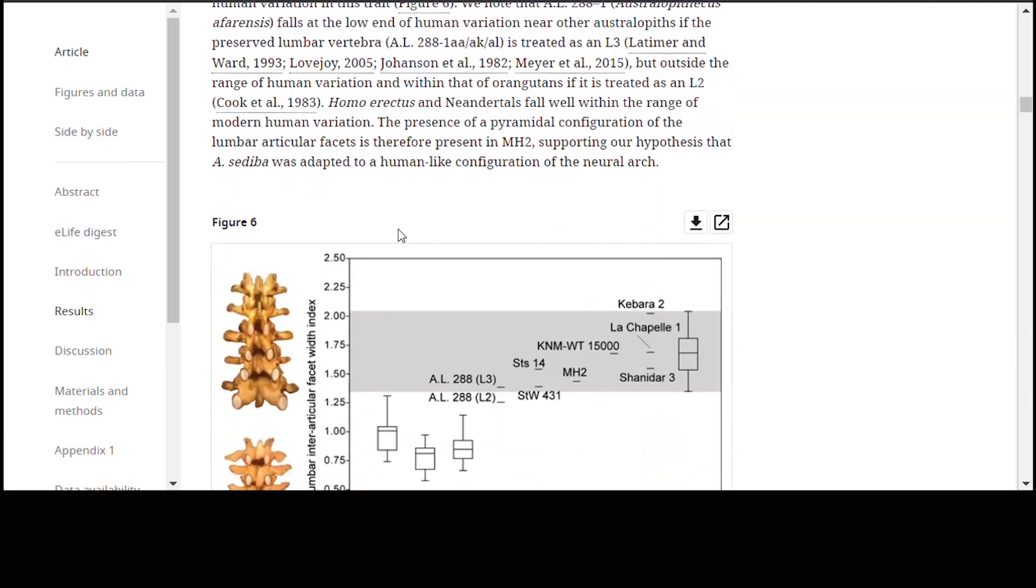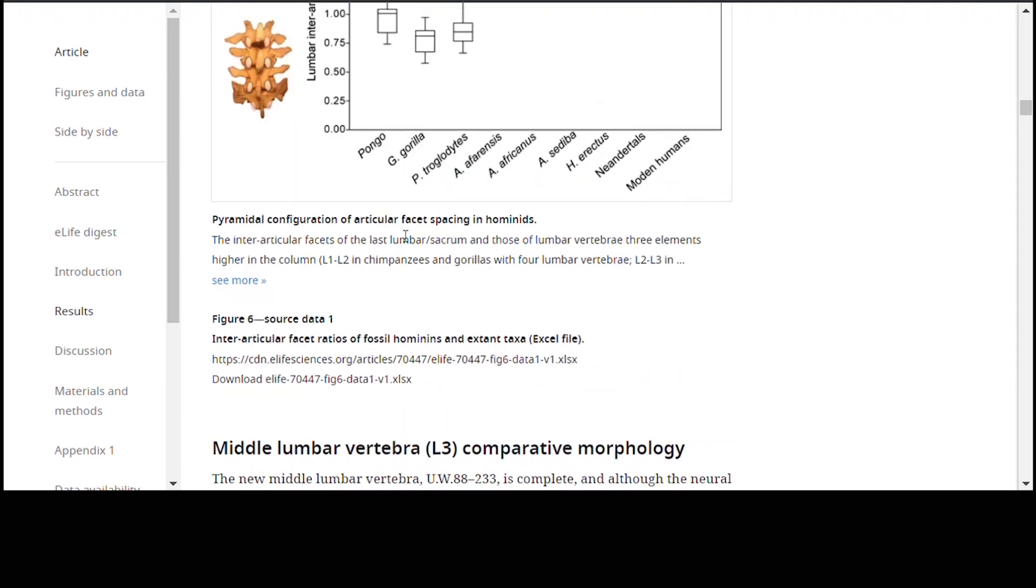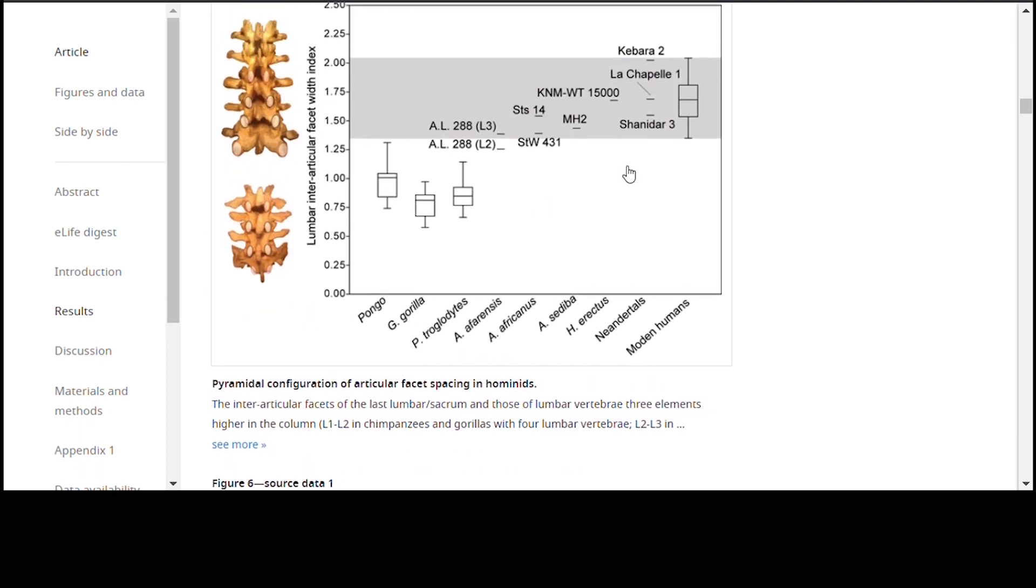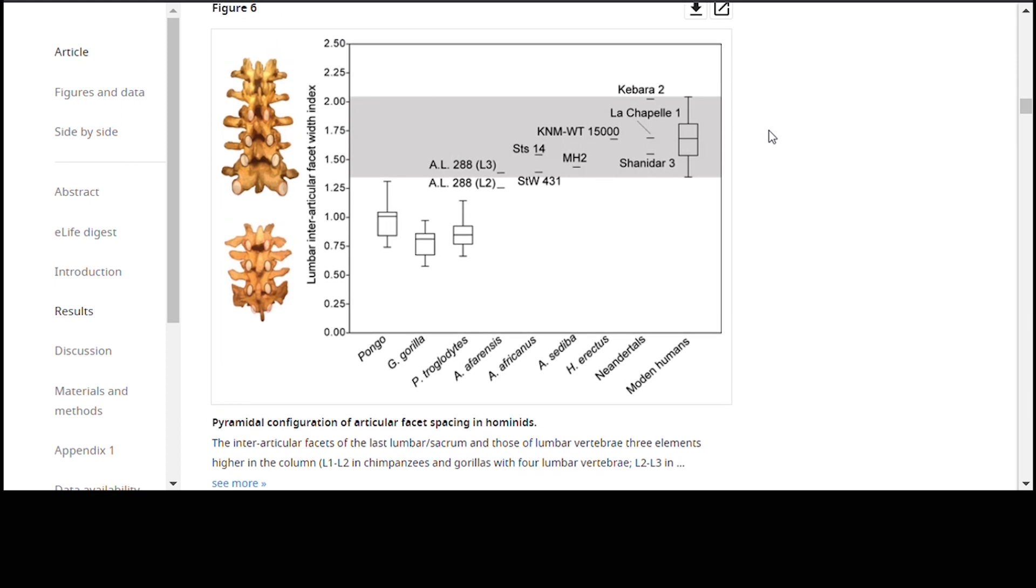Now, they've got some more interesting papers down here. Oh, what's this? Pyramidal configuration of articular facet spacing in hominids. Lumbar interarticular facet width index. That's interesting. You can see once again here that MH2, represented by this little line right here, falls within the range of modern humans and not within the range of the extant apes down here.